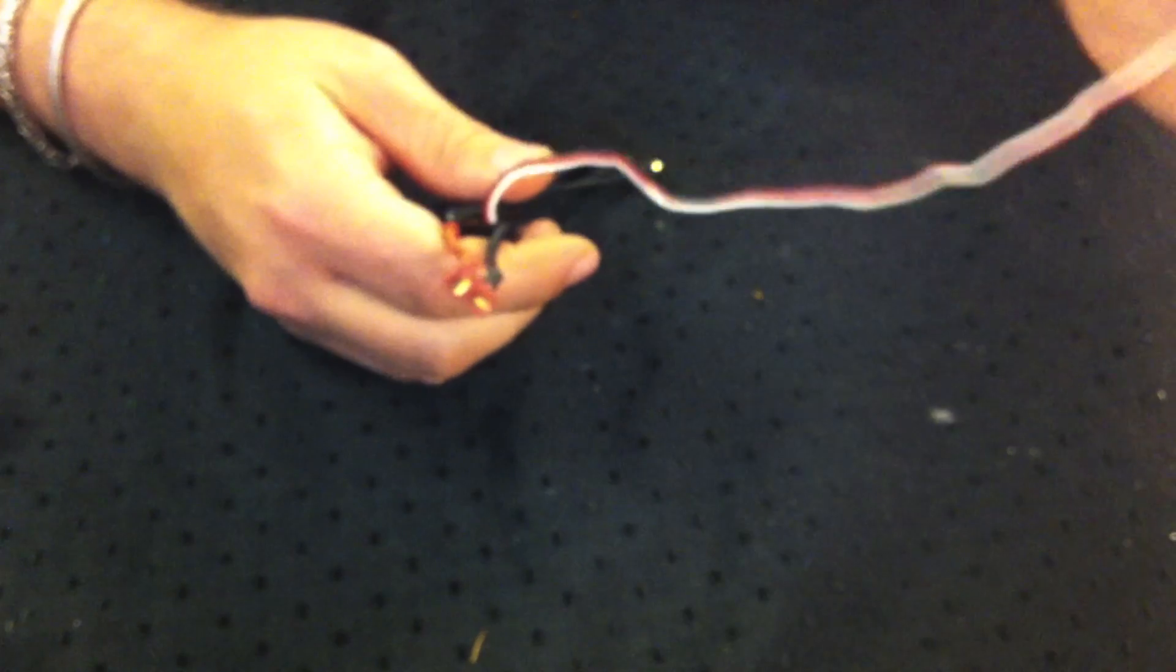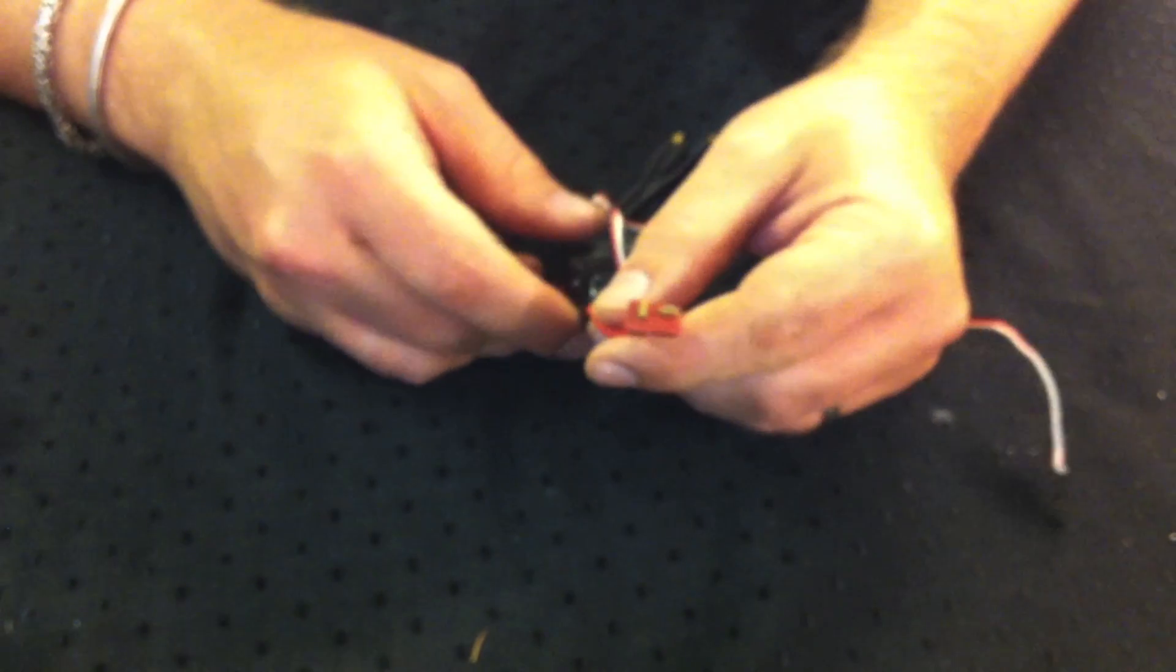This is the ESC. First end we don't care about. This one goes into the receiver. This one goes into the battery.